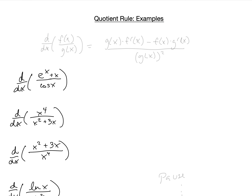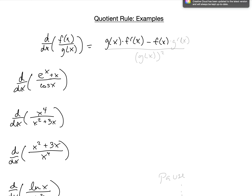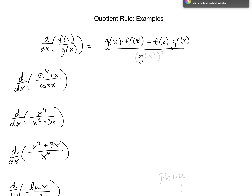In this video, we're going to do examples of a few derivatives, most of which use the quotient rule. Remember that the quotient rule for derivatives is that the derivative with respect to x of f(x) over g(x) is equal to low d high — the bottom times the derivative of the top — minus high d low — the top times the derivative of the bottom — all divided by the bottom squared.